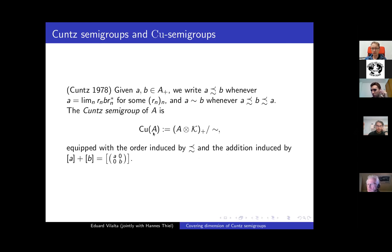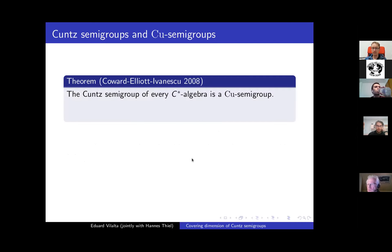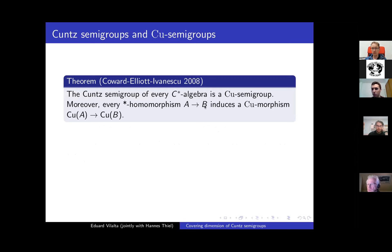Equipping Cu(A) with the ordering induced by the subequivalence and addition from diagonal addition makes it a positively ordered monoid, where the class of a positive element A is less than or equal to that of B if and only if A is Küng-subequivalent to B. This construction leads to a CU semi-group satisfying all four conditions. Moreover, whenever one has a *-homomorphism from one C*-algebra to another, it induces a CU morphism between their Küng semi-groups. I should mention that historically, the Küng semi-group was defined first, and Coward–Elliott–Ivanescu later defined CU semi-groups and CU morphisms and proved this theorem.